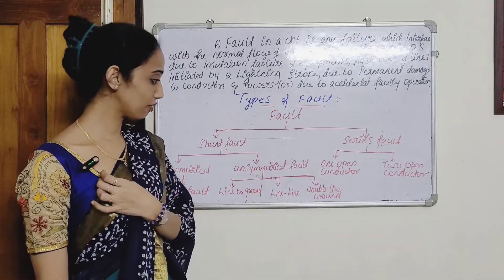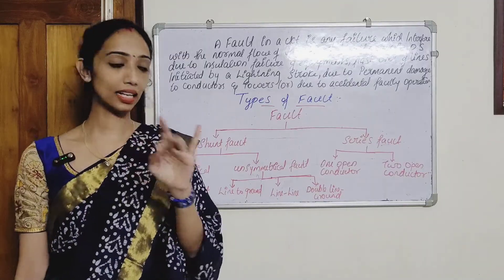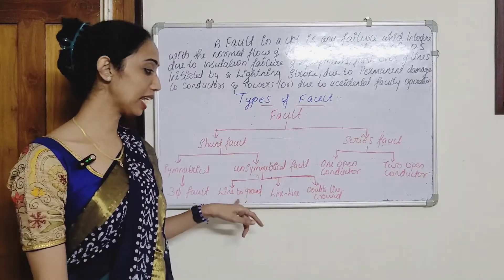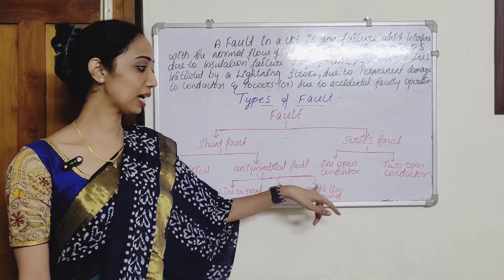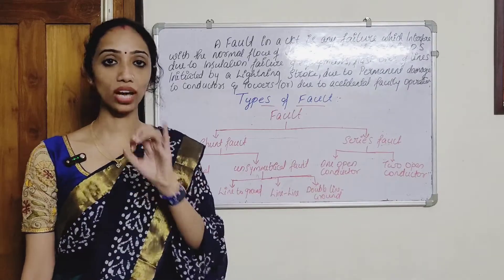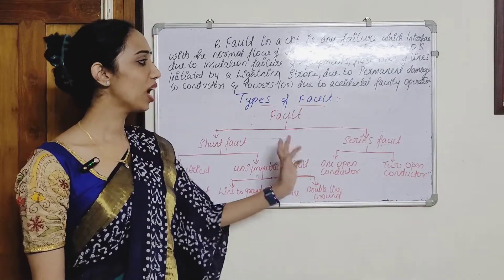Unsymmetrical faults are further classified into 3 types: Line-to-Ground, Line-to-Line, and Double-Line-to-Ground.